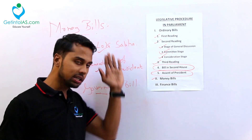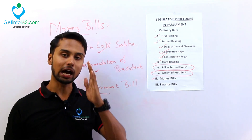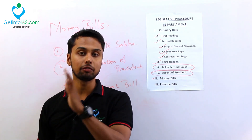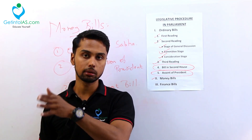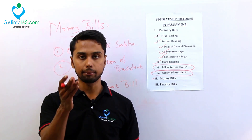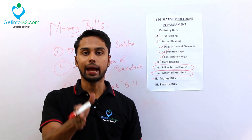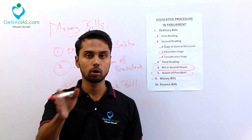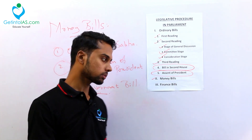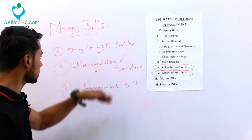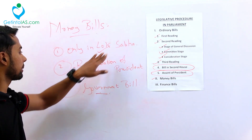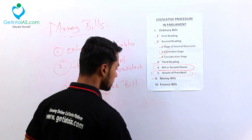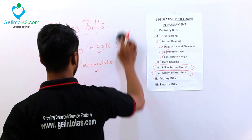While studying these conditions of money bills, you should have a comparison with the constitutional amendment bill also. Have a comparison between your money bill conditions and constitutional amendment bill conditions because more or less they are same. Important conditions: only in Lok Sabha, with the recommendation of president, and it is a government bill. Those are the important conditions of money bills.